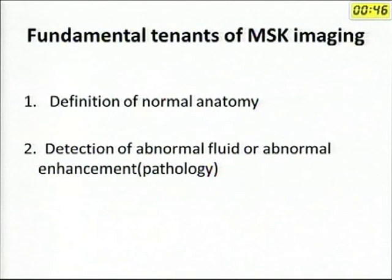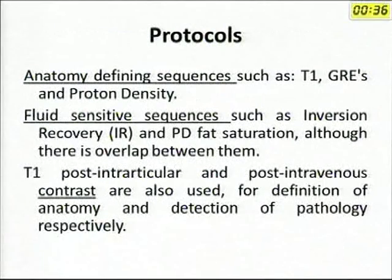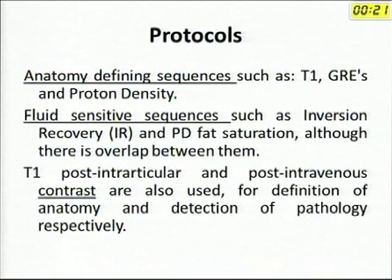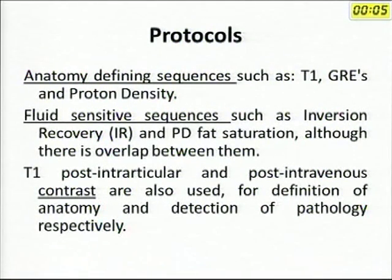Whenever I am doing an MRI for an MSK patient, I want to see the anatomy and detect abnormal fluid or abnormal enhancement. For anatomy, we use T1, GRE (gradient echo), and proton density sequences. Whenever I look for fluid — and edema is also fluid — I use inversion recovery, which is STIR: short tau inversion recovery sequence. We can also use PD fat sat images, and we can give contrast both intra-articularly and intravenously to define pathology better.